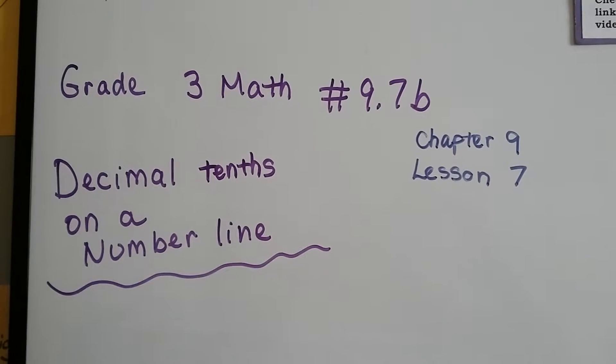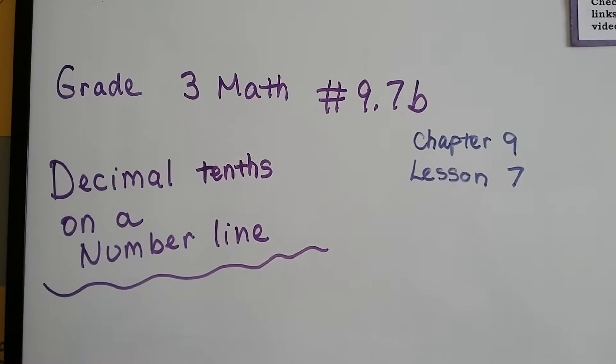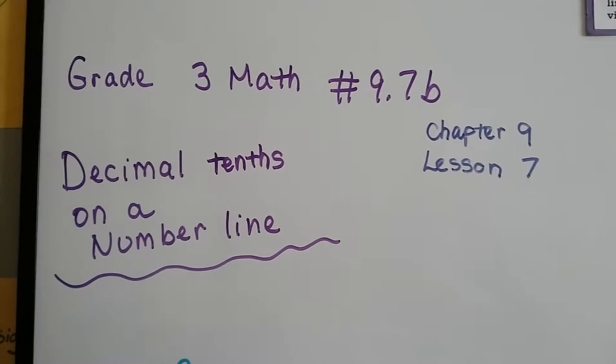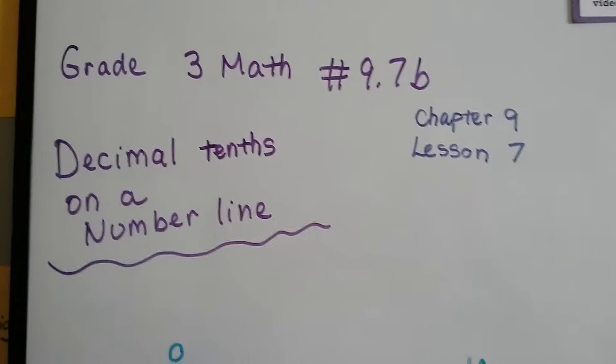Grade 3 math, number 9.7b — that's chapter 9, lesson 7: Decimal tenths on a number line.